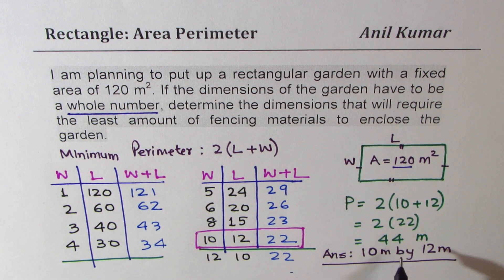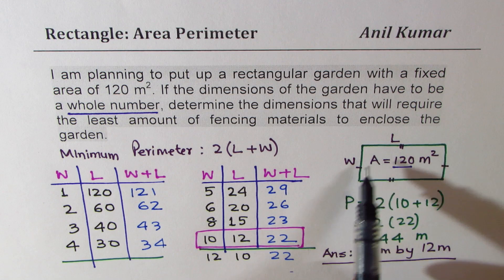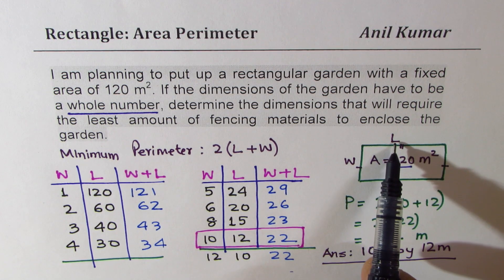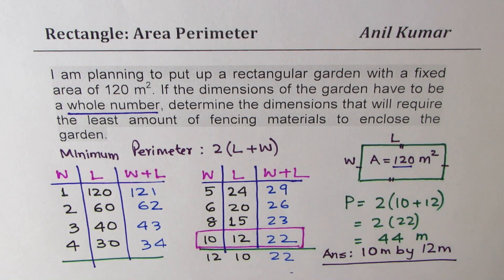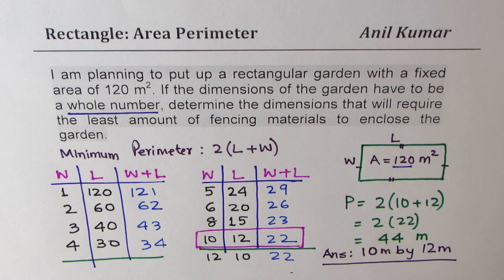Now, here is something interesting to note. If I have a square of 11 and 11, then what is going to be the area? Perimeter will still be 22.